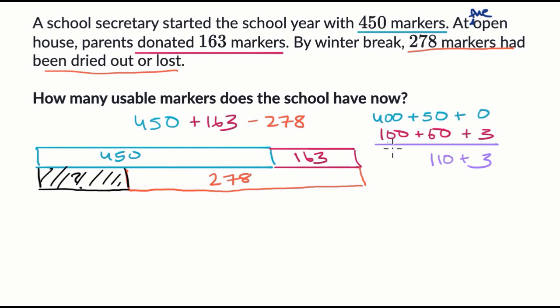And then 400 plus 100 is 500. So 500 plus 110, this part over here is 610 plus three, which is equal to 613.